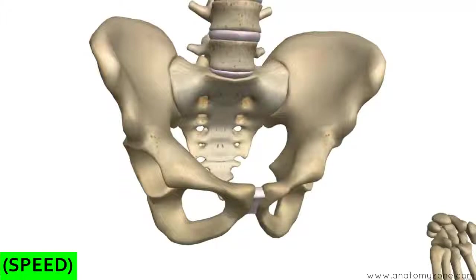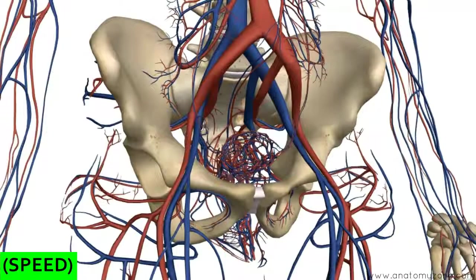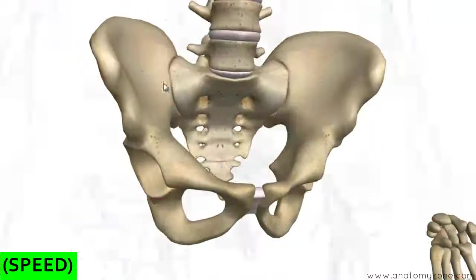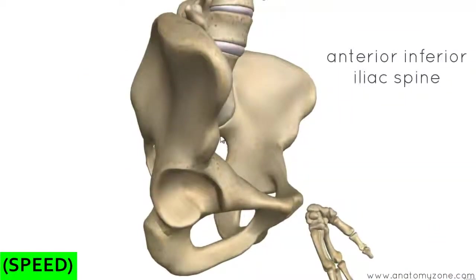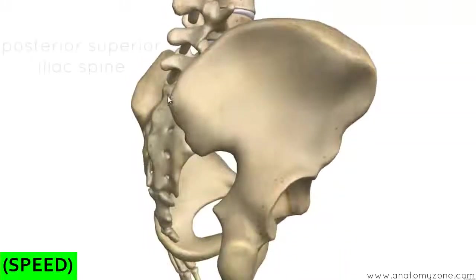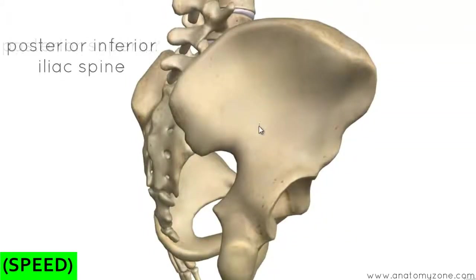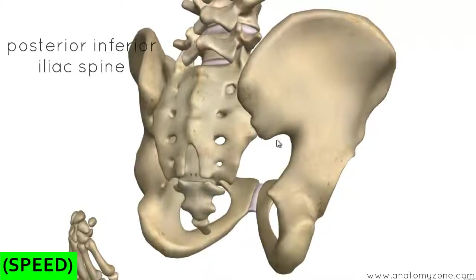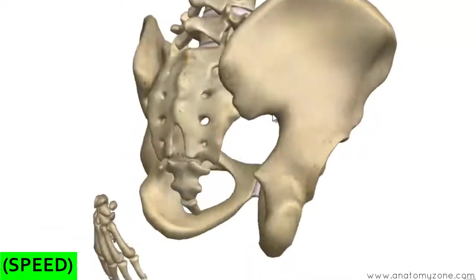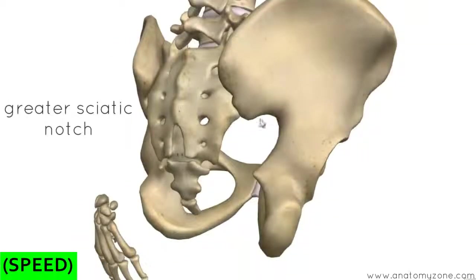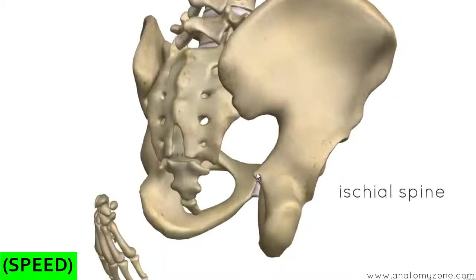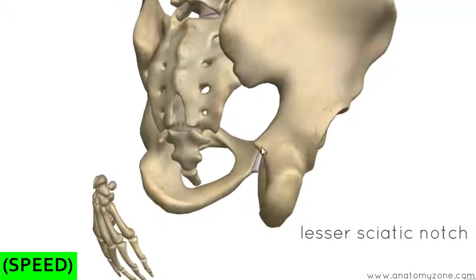You can see the femoral artery running halfway between ASIS and the pubic tubercle. Just inferior to ASIS, you've got the anterior inferior iliac spine. Following the iliac crest posteriorly, we come to the posterior superior iliac spine, and below that the posterior inferior iliac spine. Then there's this notch in the ilium — the greater sciatic notch — and below that the ischial spine, which is actually part of the ischium. Above the ischial spine is the greater sciatic notch, and below it is the lesser sciatic notch.